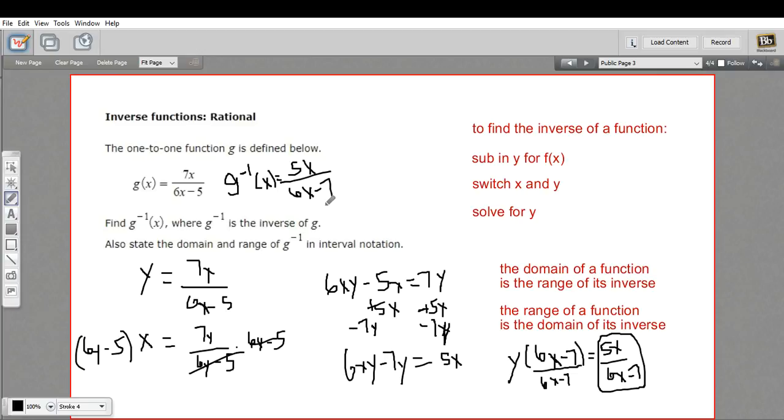To find the domain of this, we can just look at the denominator and make sure we have a condition in our domain where we're not going to have zero down here. So I'm going to take this denominator and set it equal to zero to find the excluded value. I would add 7 to both sides. I would get 6x equals 7. And then I would divide by 6. So x cannot be 7 sixths.